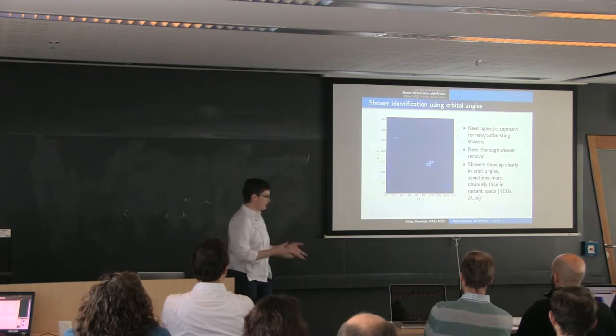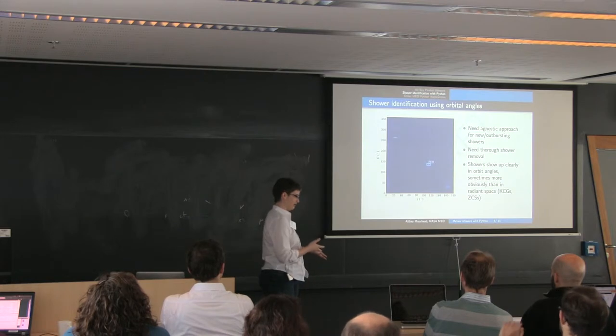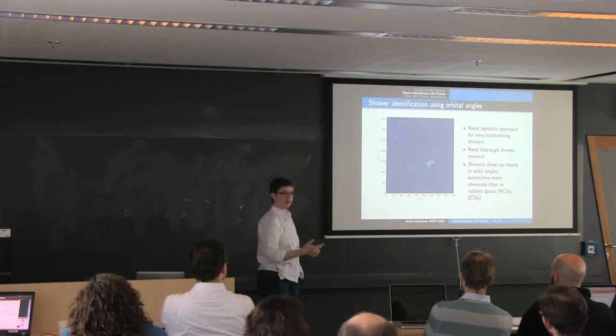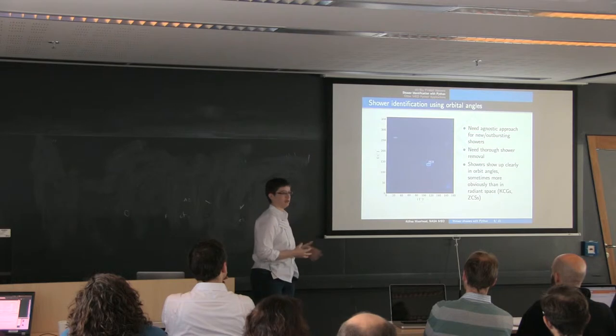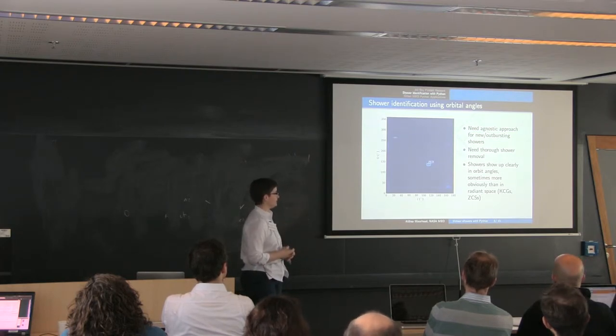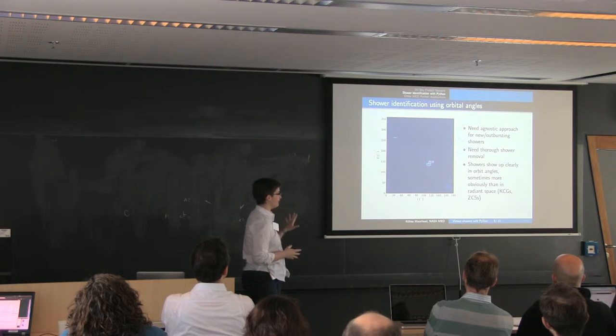So kind of a typical way to identify members of a meteor shower is using the directionality and the velocity and look for groupings in those. For our data, I've actually found that the orbit angles work better. There's some showers that show up better in orbit angles than they do in radiant and velocity. So that's the basis of my shower identification.